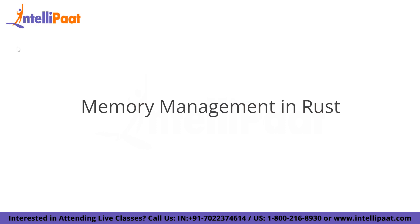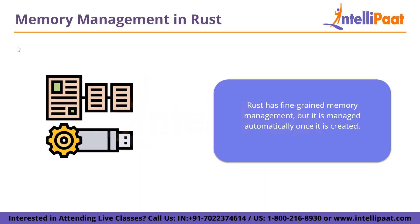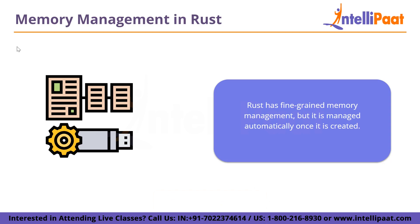Now let's discuss memory management in Rust. Memory management in Rust has fine-grained memory management, but it is managed automatically once created. When you allocate memory in Rust, you never have to truly free it manually — you can choose when to free it, but you never have to call it explicitly. Rust handles it automatically. Each variable has a scope for which it is valid, and it is automatically de-allocated when it leaves that scope. The operating system allocates memory to each program in Rust. Rust also has shared memory where we can store a reference piece of data and keep track of the reference count using ownership.